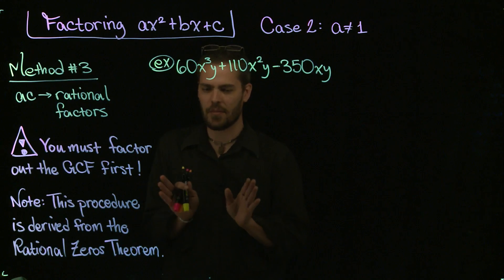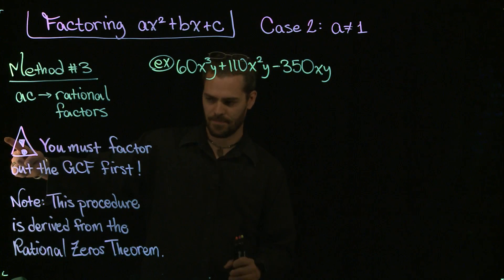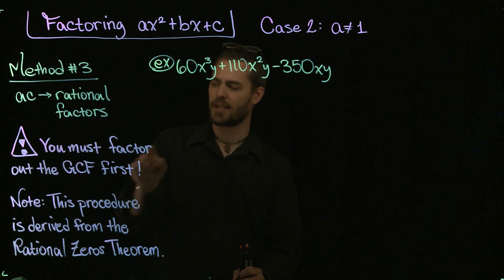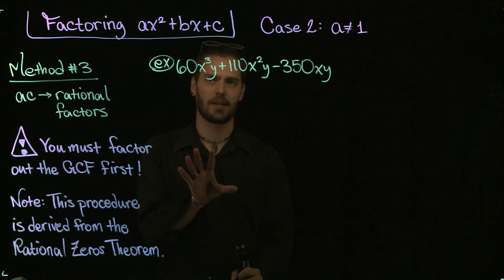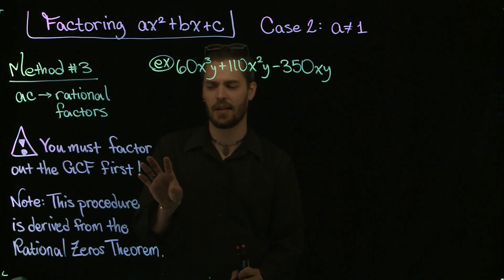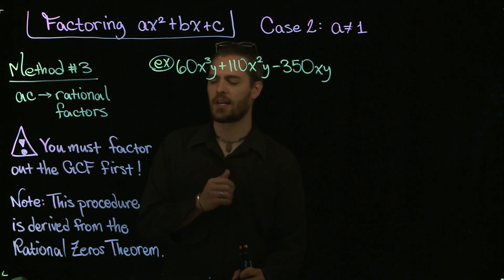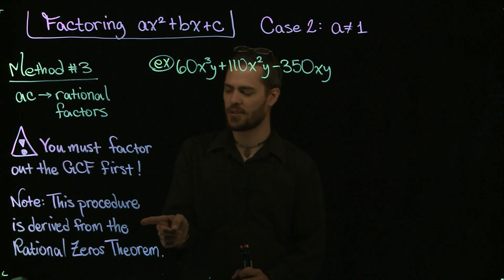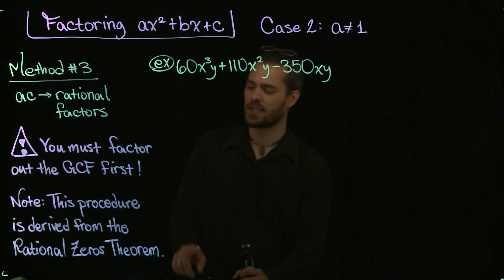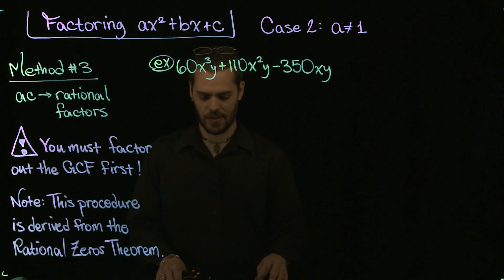Don't be scared away simply by the word fractions. You may like this method the best, but there is a cautionary statement. You absolutely must factor the GCF first for this process to work. You'll still get part of the answer if you don't, but you're going to miss that greatest common factor in the end. That's really because I'm solving an equation. I've come up with a procedure based on solving an equation, and that procedure is derived from the Rational Zeros Theorem. So please feel free to explore it more in depth with the Rational Zeros Theorem.